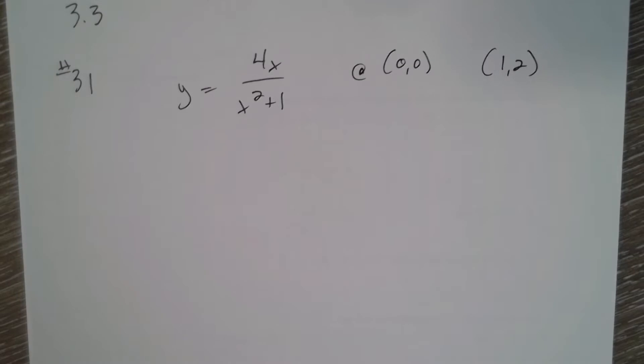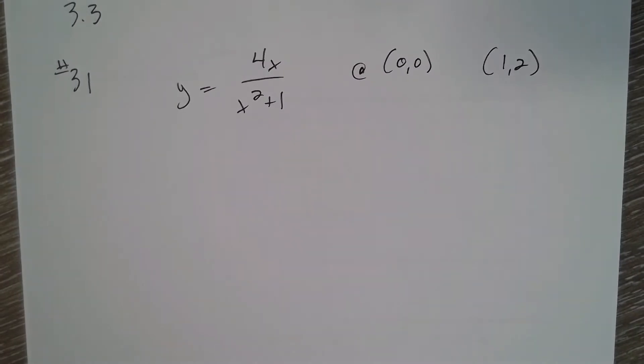3.3 number 31 says find the tangents to Newton's serpentine at the origin and at the point one comma two. So find the derivative and then plug in the points. I don't know if they want a tangent line or if it's just the slope at those two points.